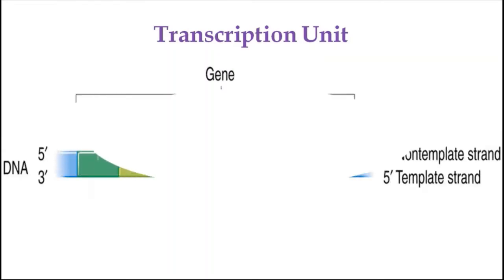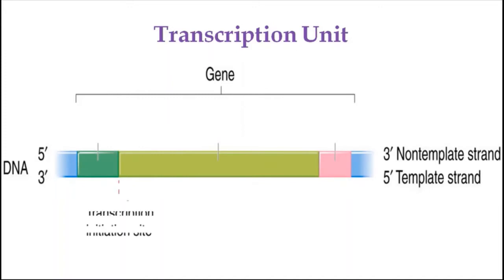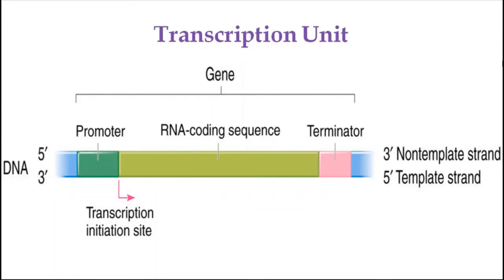A transcription unit is the sequence of nucleotides in DNA that codes for a single RNA molecule along with sequences necessary for its transcription. It normally contains a transcription initiation site, a promoter, structural gene or RNA coding sequences, and a terminator.